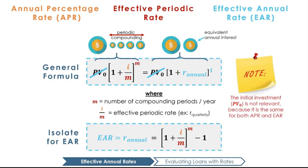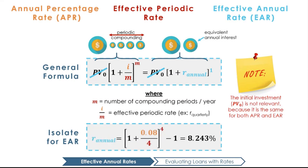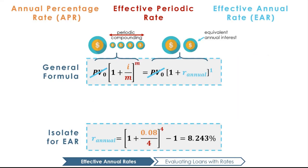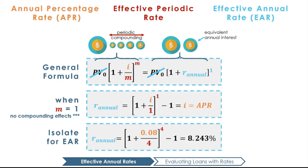Notice that the initial or present value of our investment isn't relevant here, since it's the same for APR and EAR, and we can eliminate it from our equation. This formula reflects the same logic as the steps we just used to calculate EAR, but it saves us some time. Applying it to the example we just discussed, we get 1 plus 0.08 over 4 to the power of 4 minus 1, which equals 8.243% — the same answer we just calculated. It's important to note that the effective annual rate of an investment compounded annually would be the same as the stated rate, since m would be 1, so EAR equals 1 plus APR over 1 to the power of 1 minus 1, also known as just the APR.